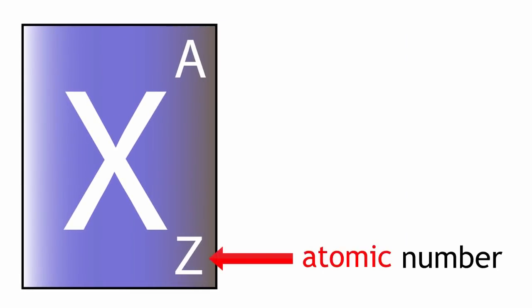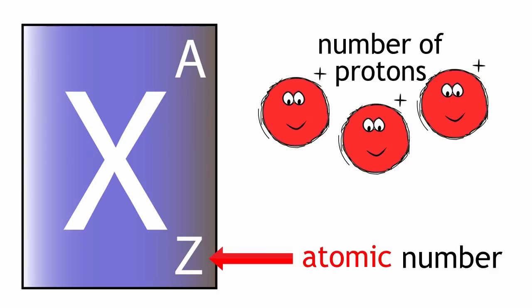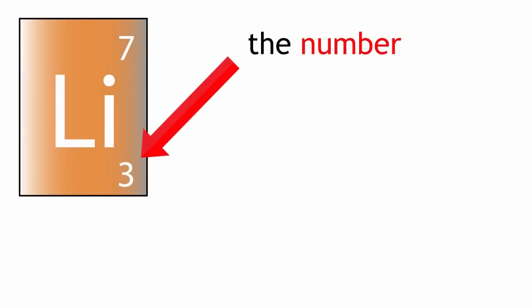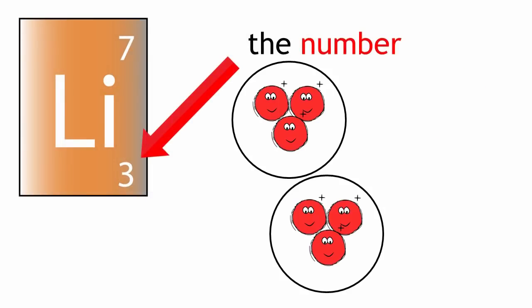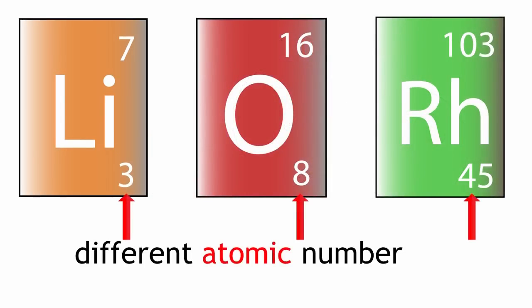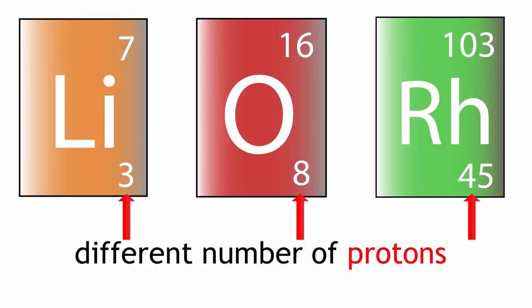The atomic number has a symbol Z. This number tells you how many protons are in one atom of an element. The number is always the same for all atoms of a particular element. Atoms of different elements have a different atomic number, meaning they have a different number of protons.